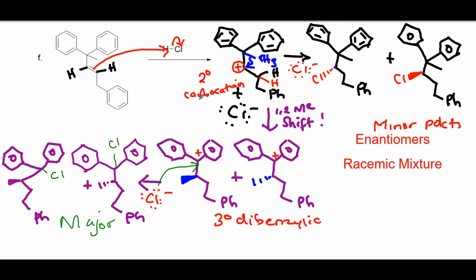Once you do that, you get a secondary carbocation that is not yet benzylic, so it's not as stable as possible. Look to the most substituted carbon bonded to C+ and ask which group to move. The molecule will move the CH3 (methyl group in blue) — do a 1,2-methyl shift.